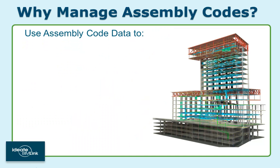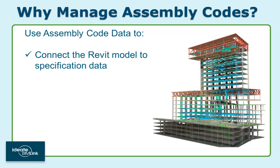Before we take a look at this workflow, we should review why we would bother with the assembly code data. Assembly code data can be used to connect the Revit model to specification data. eSpecs, for example, connects directly to this information to automatically generate a spec.